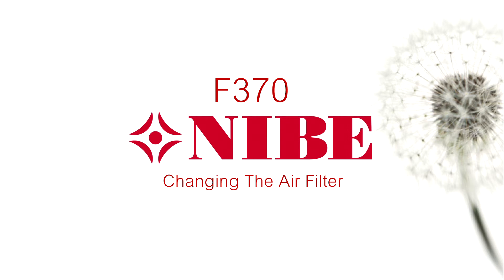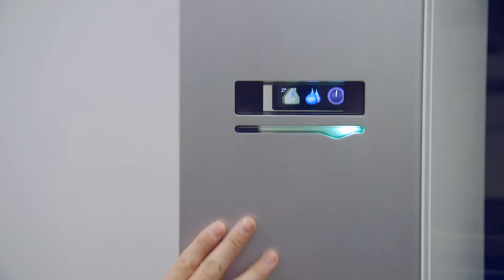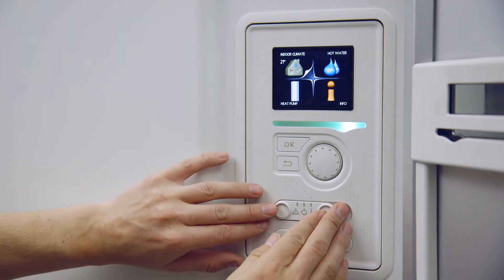The filter in your heat pump should be cleaned roughly every three months and replaced once a year. To clean the filter, firstly turn the heat pump off by switching the front power switch to zero.